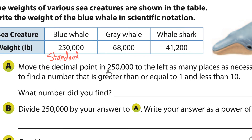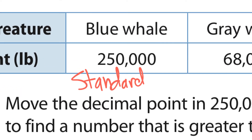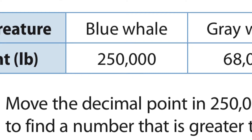Move the decimal point in 250,000 to the left as many places as necessary to find a number that is greater than one and less than 10. So where would the decimal point go? In 250,000, the decimal is always at the end — it's just not written. So if the decimal is right there, where can we move it so we have a number greater than or equal to one and less than 10?